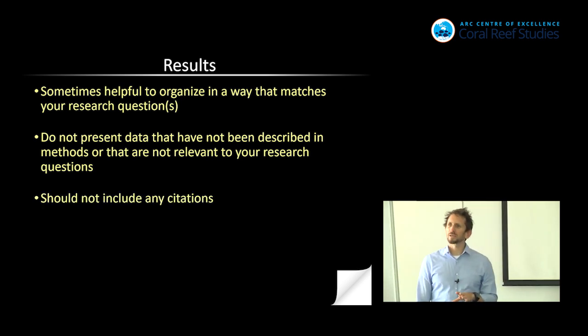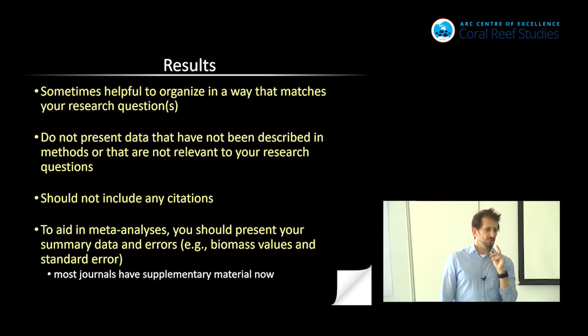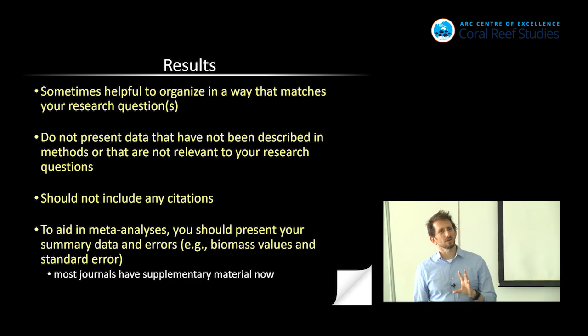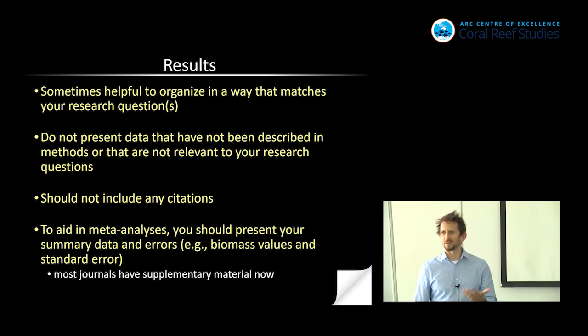Your results should not include any citations. If you're citing it, you're in the wrong section. Grab that sentence that you're in and move it somewhere else, because if you're citing it, it's in the wrong section. And to aid in meta-analyses, you should present your summary data and your errors. So this might include whatever biomass values and standard errors or whatever it may be. And most journals have a supplementary material now, so you can present those sort of summary data. And that's what sort of allows people to uptake your data better. And ultimately, that's what we want. We want people to use our research.